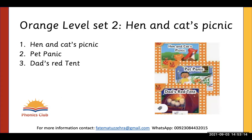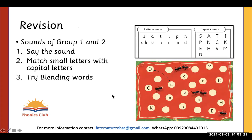In Orange Level, Set 2 — 'Hen and Cat's Picnic' — the sounds of Group 1 and Group 2 are being revised. You can see the capital letters and small letters, and students are supposed to match them with this reader. Students are reinforced to look at the capital and small letters of Group 1 and Group 2 sounds.